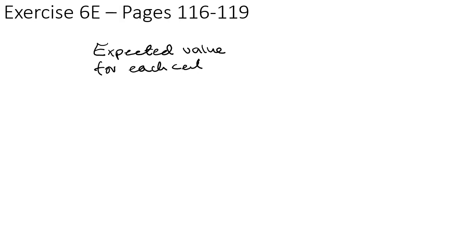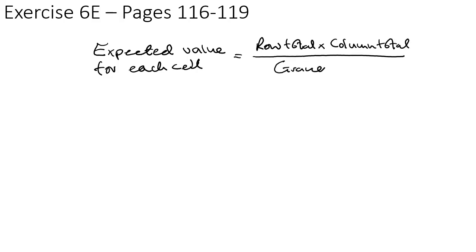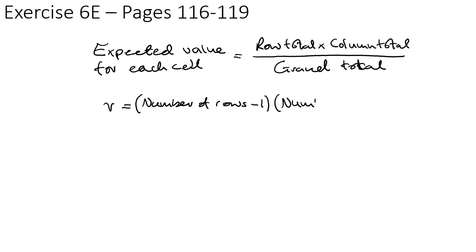I should now be able to do exercise 60 on pages 116 to 119. To summarize: if we want to work out the expected value in each cell of a two-way contingency table, we do row total times column total divided by the grand total. To find the number of degrees of freedom, it's (number of rows minus 1) times (number of columns minus 1).